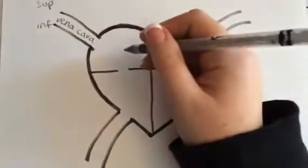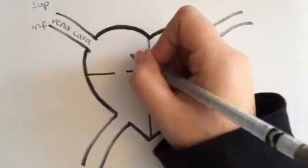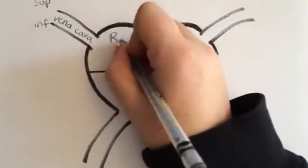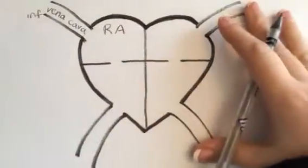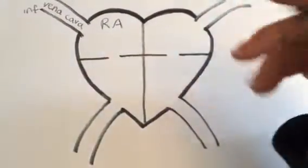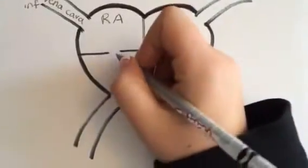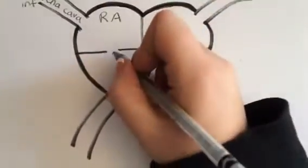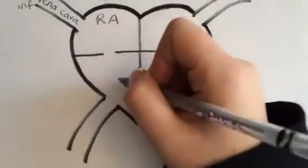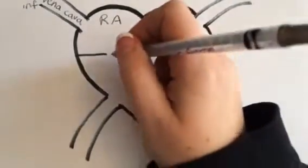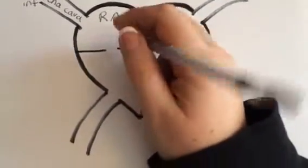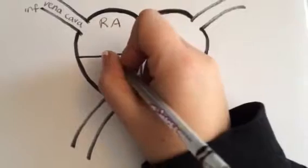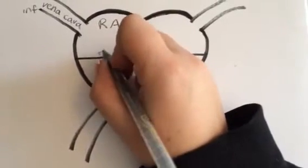The vena cava brings blood from your body into your heart, into the right atrium — the top chamber of your heart. From there it goes to the next chamber and must pass through a valve, which is the tricuspid valve.